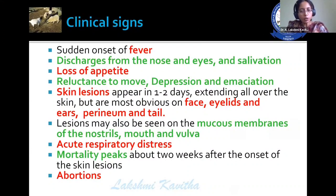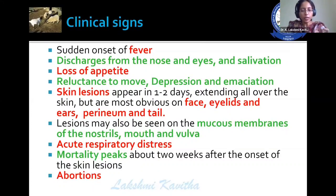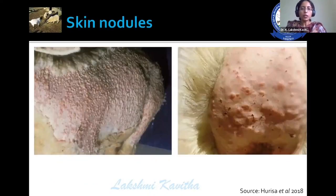Lesions may also be seen on the mucous membranes of nostrils, mouth, and vulva. Acute respiratory distress is observed. Mortality peaks about two weeks after the onset of clinical signs, especially the skin lesions. Abortions occur because of secondary complications of this disease.